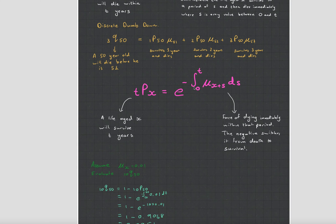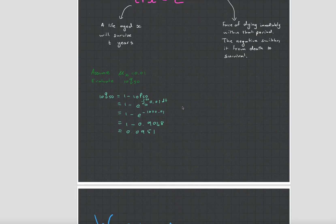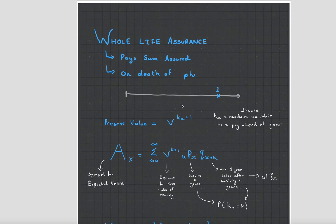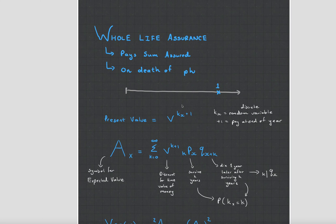It's just the negative of the total force of dying which gives you the chance or the force of staying alive. Okay but yeah that's CT4 stuff. CT5 stuff starts with this whole life assurance. This is the most simplistic contract. What it basically does is you take it out on a life and whenever that life dies you get paid a sum assured. So the payment is made on death.